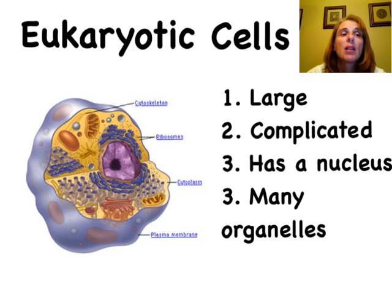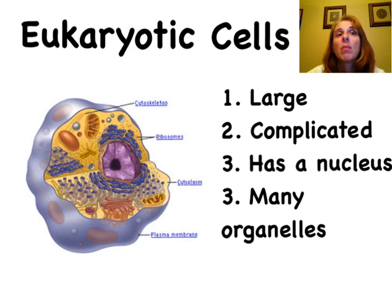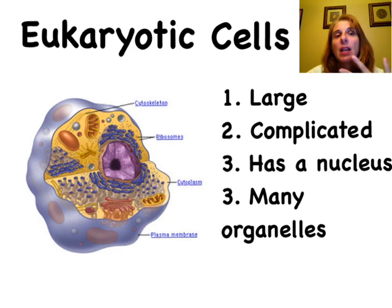So these cells definitely have a nucleus. But in addition to having a nucleus, they'll have all of those other organelles that contain membranes — things like the mitochondria, the chloroplast, the endoplasmic reticulum, and the Golgi bodies.